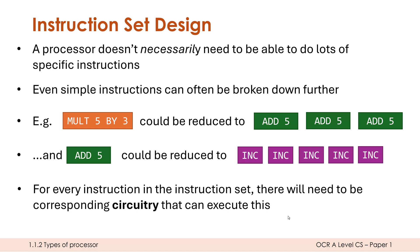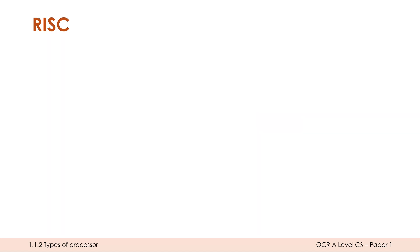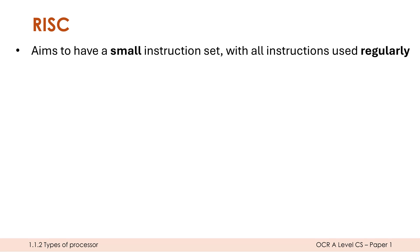The RISC approach to processor design aims to have a small instruction set — not necessarily the smallest possible, but a relatively small one where all instructions are ones a programmer would use regularly. There is no magic number, but typically this means somewhere between 30 and 100 instructions in total.